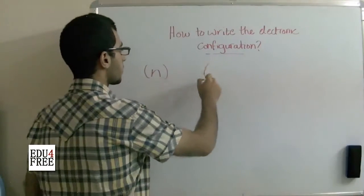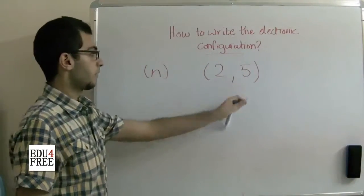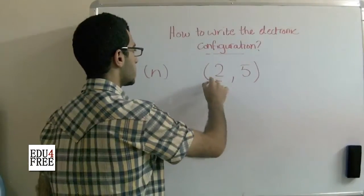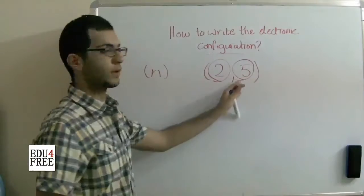So its shape is like this: 2 then 5. This means that the first energy level contains 2 electrons and the second energy level contains 5 electrons.